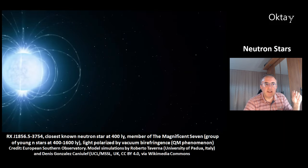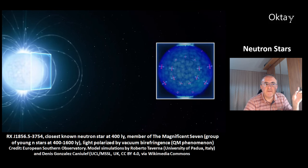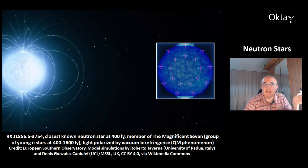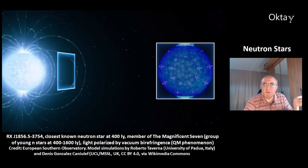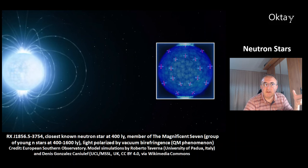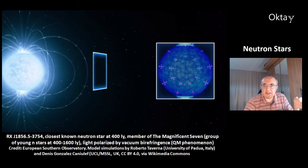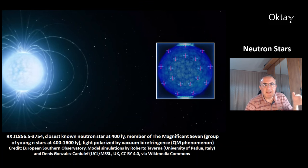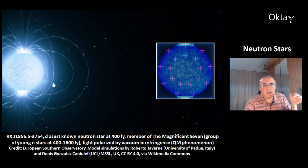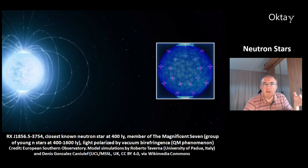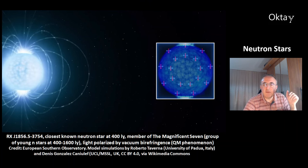This object, RX J1856.5-3754, is the closest known neutron star at 400 light years distance. It is a member of the Magnificent Seven group — a group of young neutron stars at 400 to 1600 light years, named after the famous western movie The Magnificent Seven. You can see that light is polarized by a quantum mechanical phenomenon called vacuum birefringence.